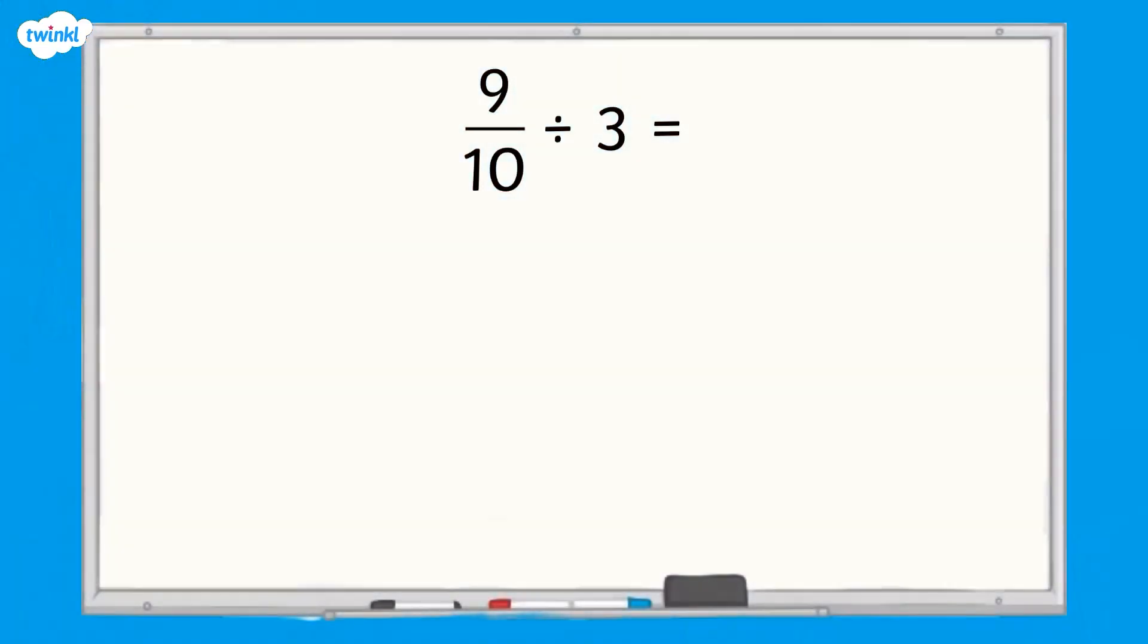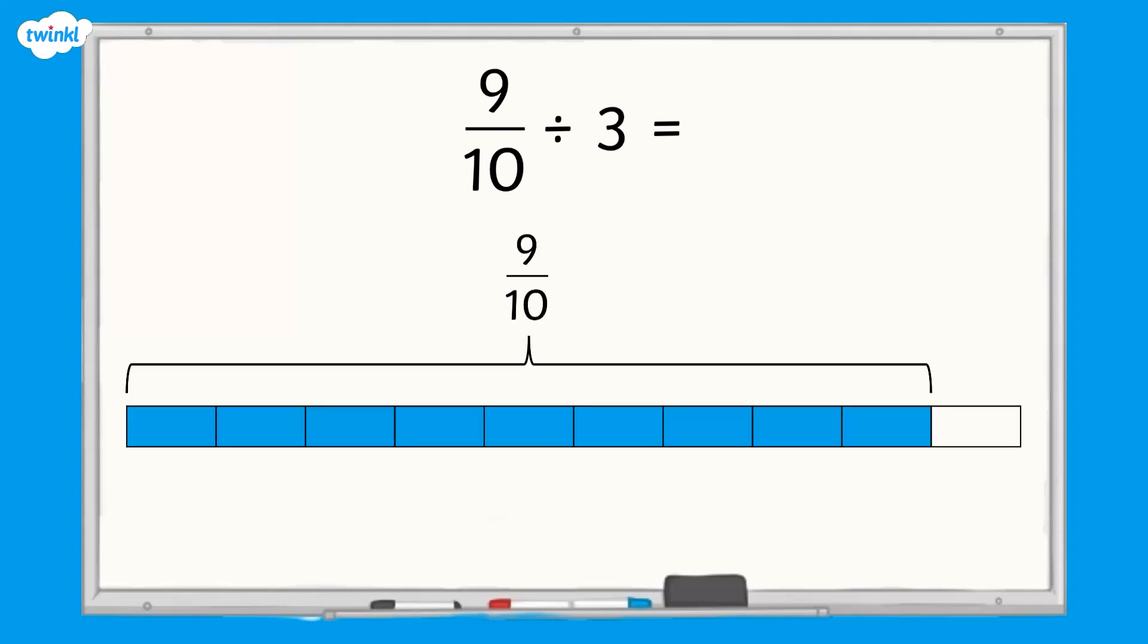Let's get started dividing a fraction by an integer. To divide 9 tenths by 3, we start with 9 tenths. We can represent this by splitting the bar model into 10 equal pieces and shading 9 of them.